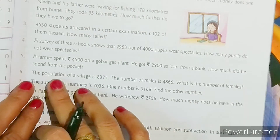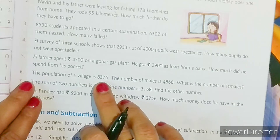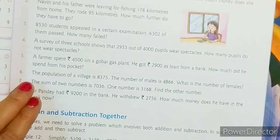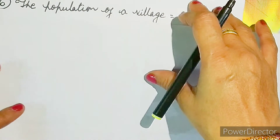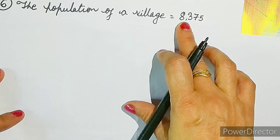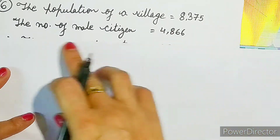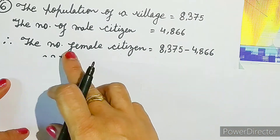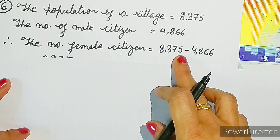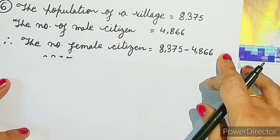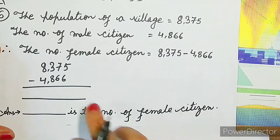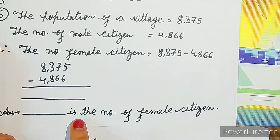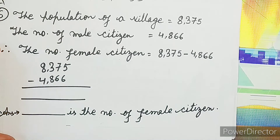Let us move on to question number six. The population of a village is 8375. The number of males is 4866. What is the number of females? The first statement: the population of a village is equal to 8375. The second statement: the number of male citizens is equal to 4866. The third statement: the number of female citizens is equal to 8375 minus 4866. You have to subtract both terms and write the answer in the blank space, then write: is the number of female citizens.